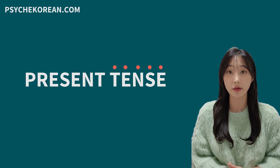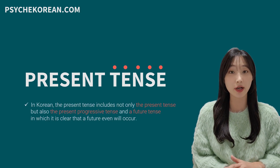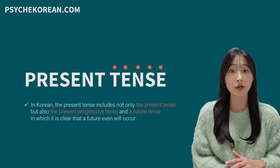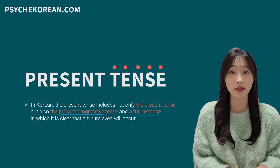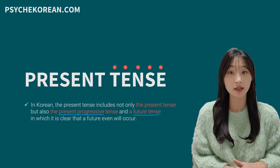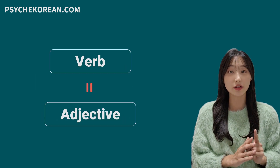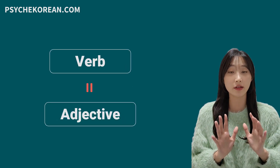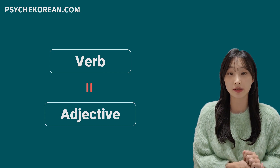In Korean, the present tense includes not only the present tense but also the present progressive tense and the future tense in which it is clear that the future event will occur. You also need to know that in Korean, verbs and adjectives are treated just the same.